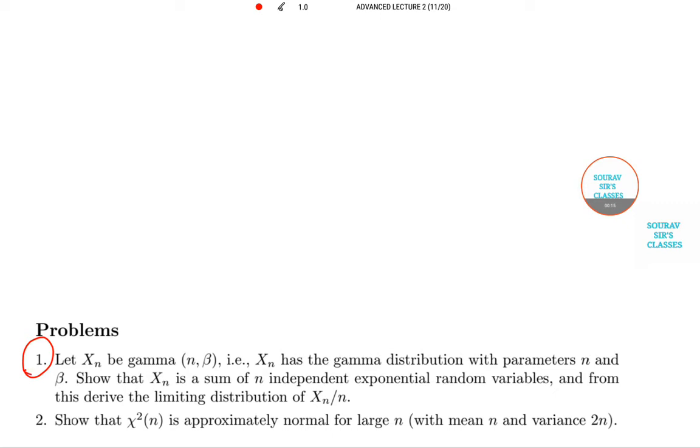Now the first question is let Xn be the gamma. That is, Xn has the gamma distribution with parameter n and beta. Show that Xn is the sum of n independent exponential random variables and from this derive the limiting distribution of Xn by n.